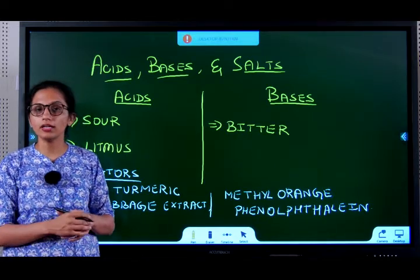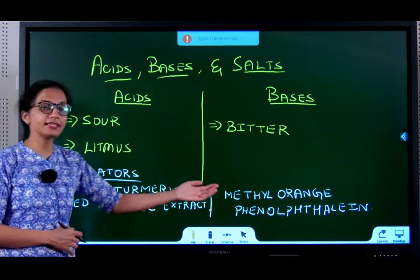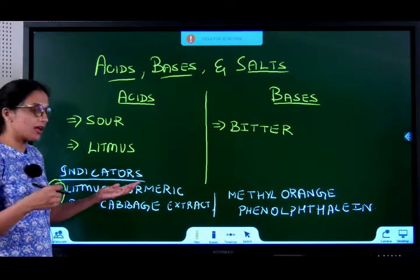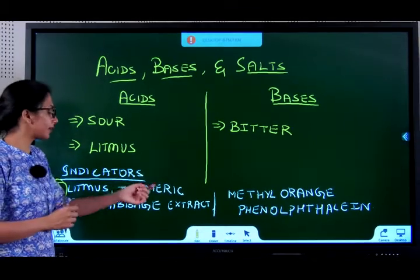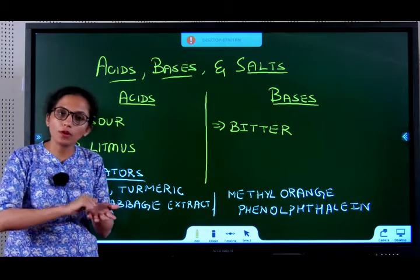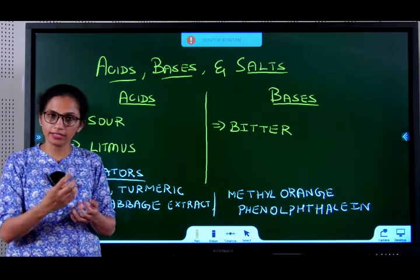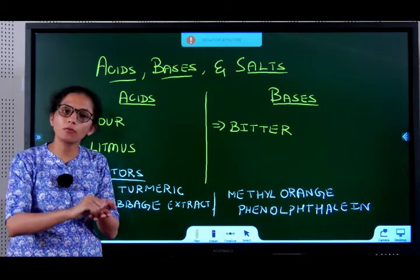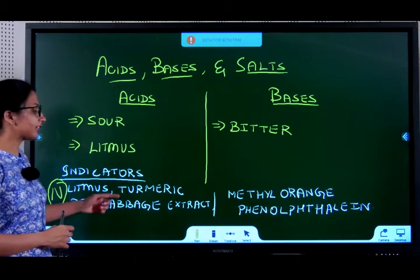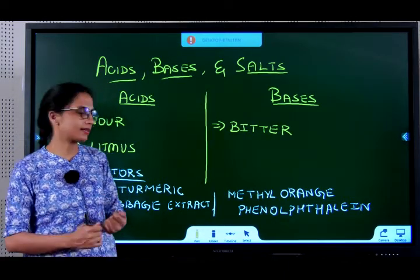Such substances are called indicators. We broadly have two types: natural indicators and synthetic indicators. Natural indicators include litmus, turmeric (which you call haldi), and red cabbage extract. For example, when dal or sambar falls on your shirt and you put soap on it, the color of the stain changes because turmeric is a natural indicator — it is yellow initially, but soap is a base and causes a color change.